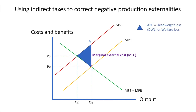If the government intervenes in this market and wants to reduce the quantity produced, it could impose an indirect tax of AB per unit of production. That would internalize the externality, which means the cost of the externality has been pushed back onto the economic agent producing it. Currently the cost is external and thus is an externality. After the specific indirect tax, it would be internalized.